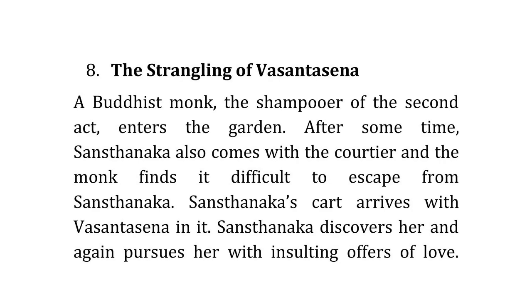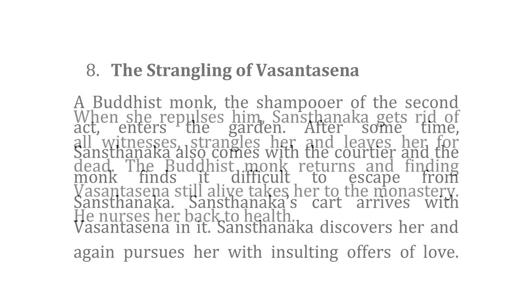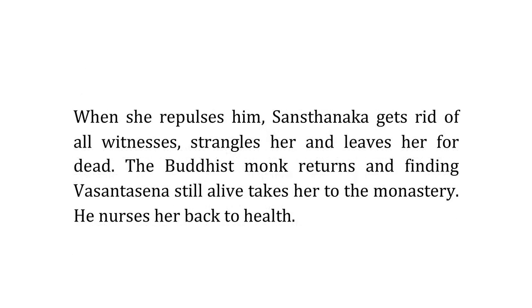Act 8: The Strangling of Vasantsena. A Buddhist monk — the shampooer from the second act — enters the garden. After some time, Sansthanaka also comes there with his courtier. The monk finds it difficult to escape but somehow manages to do so. Sansthanaka's cart arrives with Vasantsena inside it. Sansthanaka discovers her and again pursues her with insulting offers of love. When she repulses him, Sansthanaka gets rid of all witnesses, strangles Vasantsena, and leaves her for dead in the garden. When Sansthanaka leaves, the Buddhist monk returns, finds Vasantsena still alive, and takes her to the monastery, where he nurses her back to health.